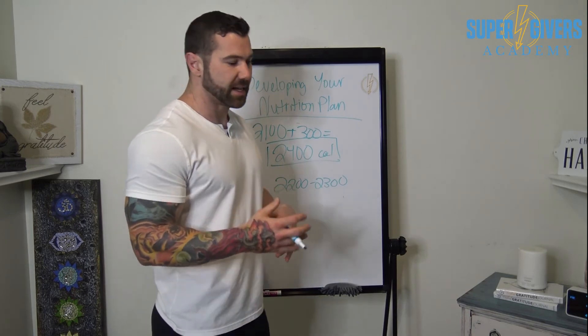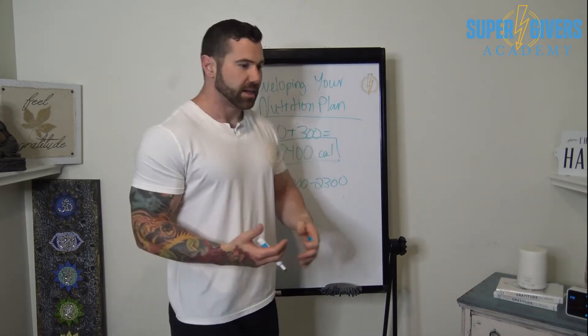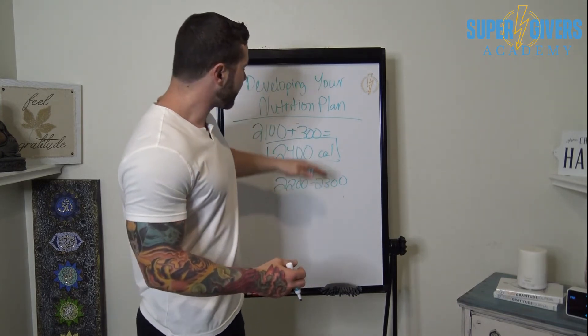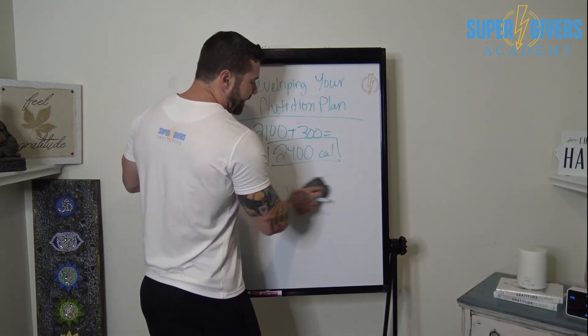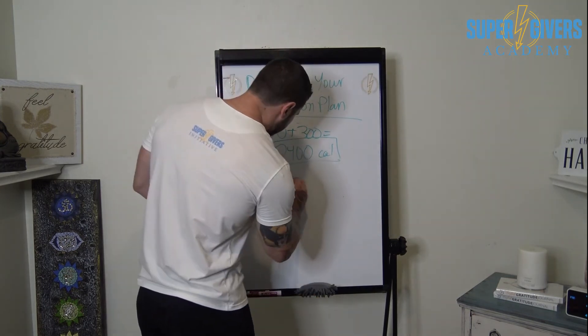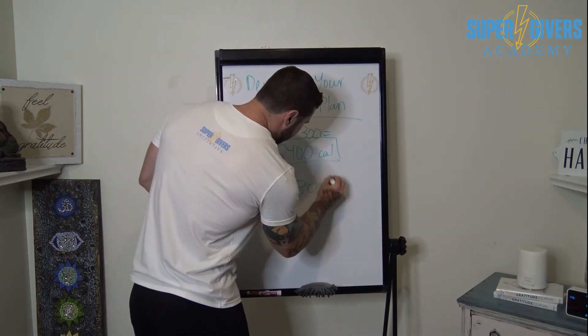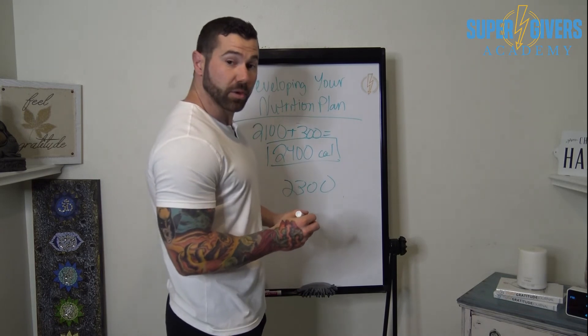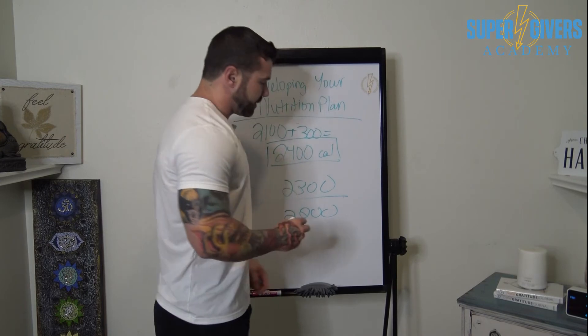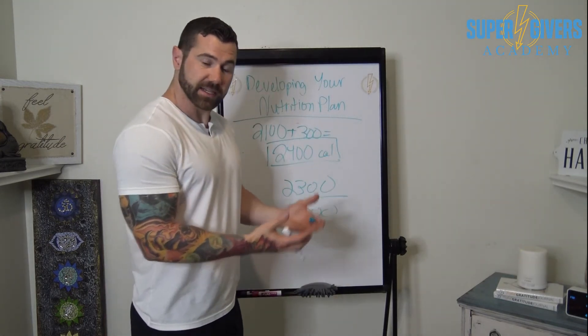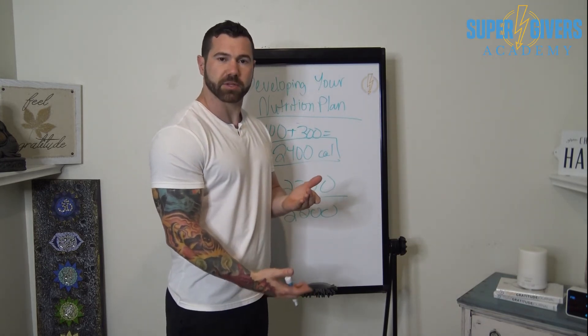Once you lose weight — say your weight was 190 pounds and you drop to 187 — go back and re-enter your numbers into the tools. They'll give you a new calorie count, maybe now 2,300 calories. To stay in a caloric deficit, you'd then eat 2,200. This is how you lose body fat: by being consistent and staying on top of your numbers.